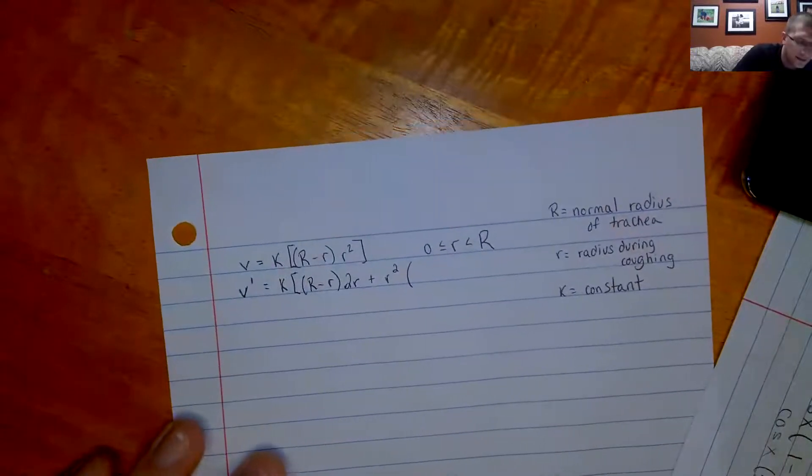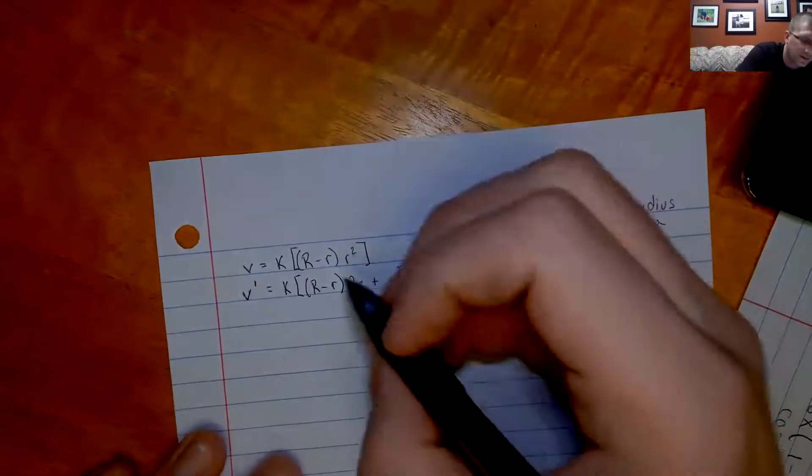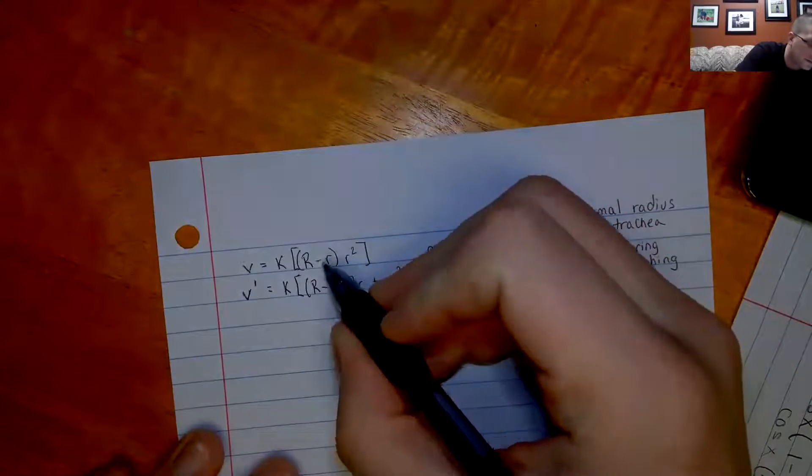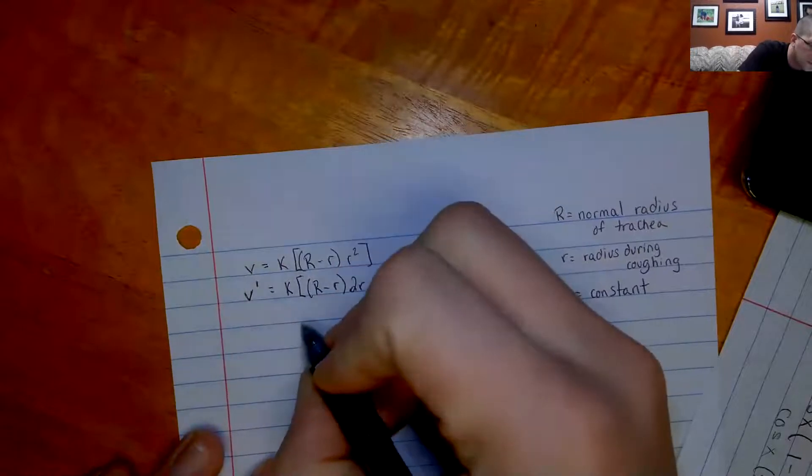Now, because the capital R is the normal radius of the trachea, that is not changing. So that is also a constant. So really, I just need to find the derivative of this negative r, which would be negative 1.